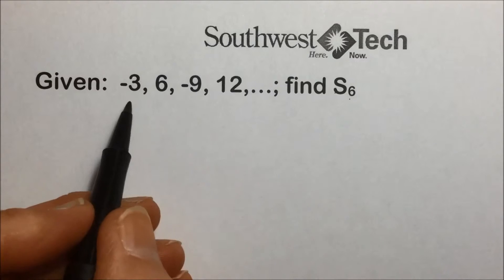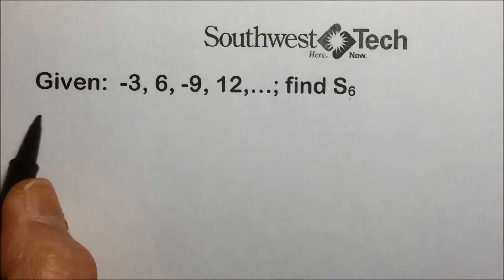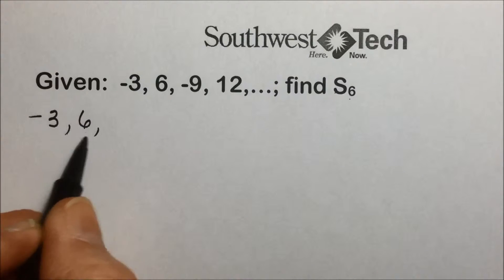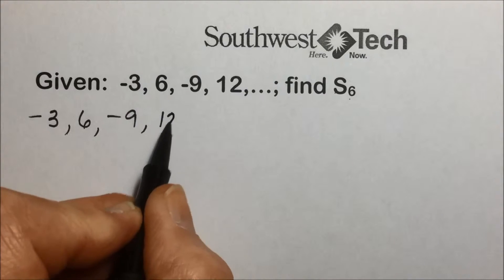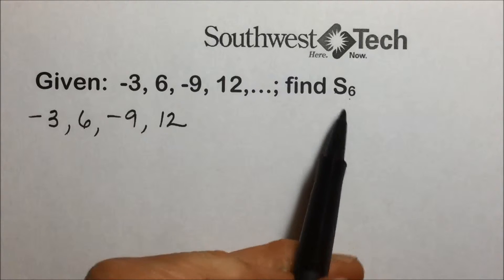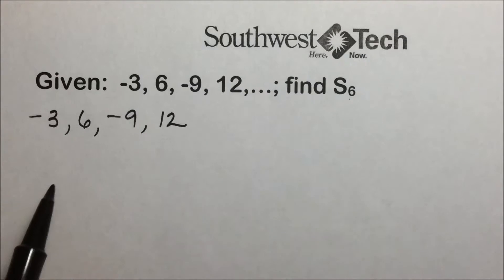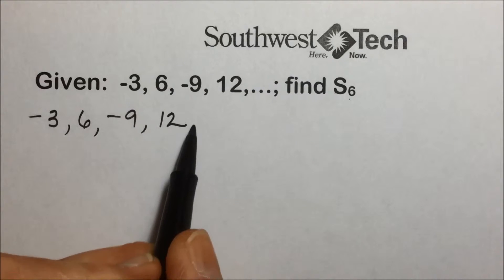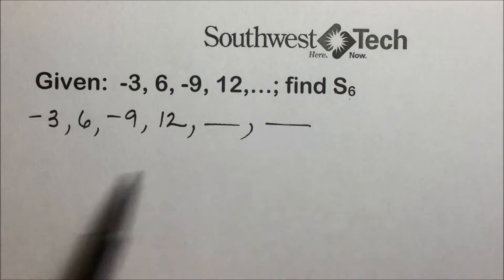Well we only have the first four terms, and let me rewrite those here. They're asking us to add these together with the symbol S sub 6, but we only have four. We need to know what the fifth and the sixth terms are before we can solve this problem.